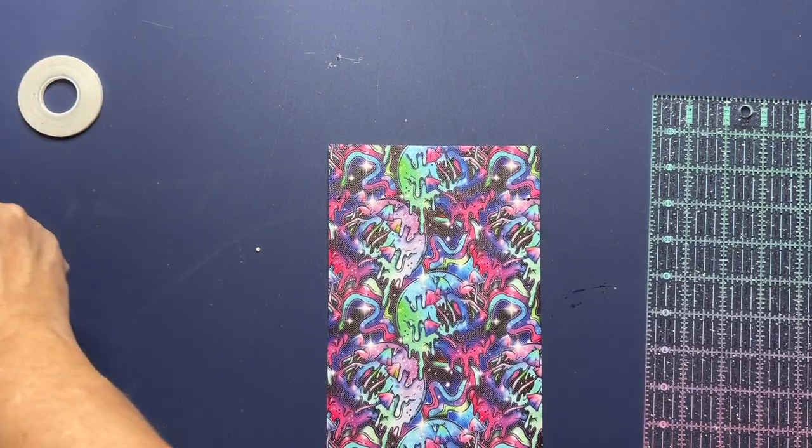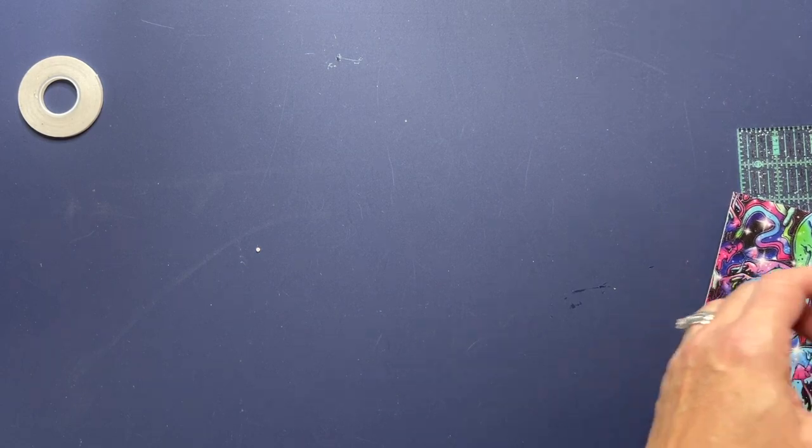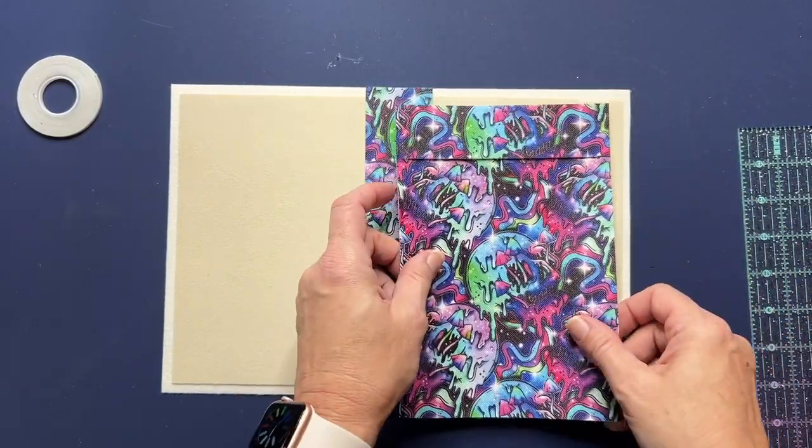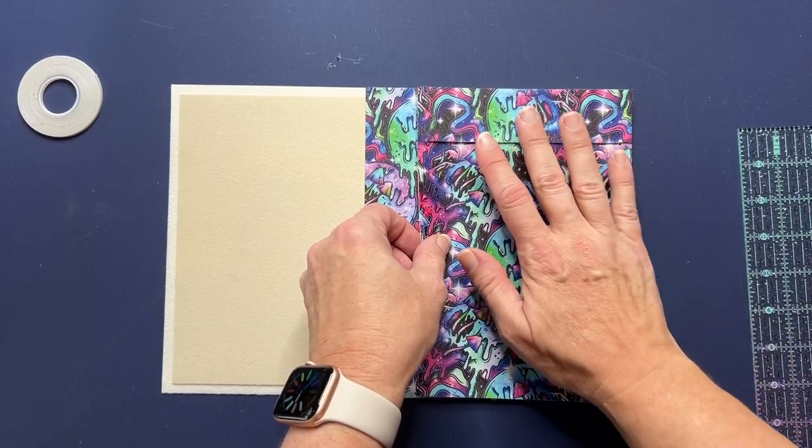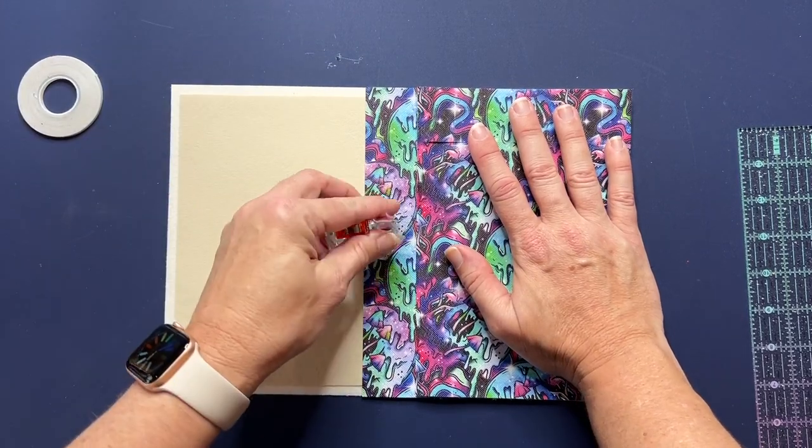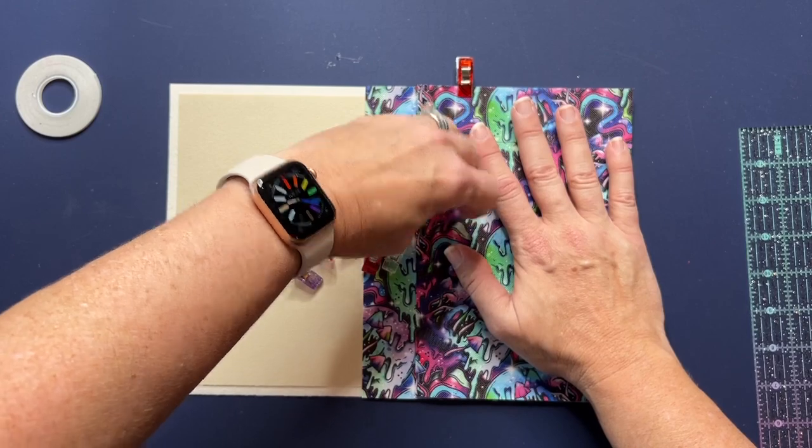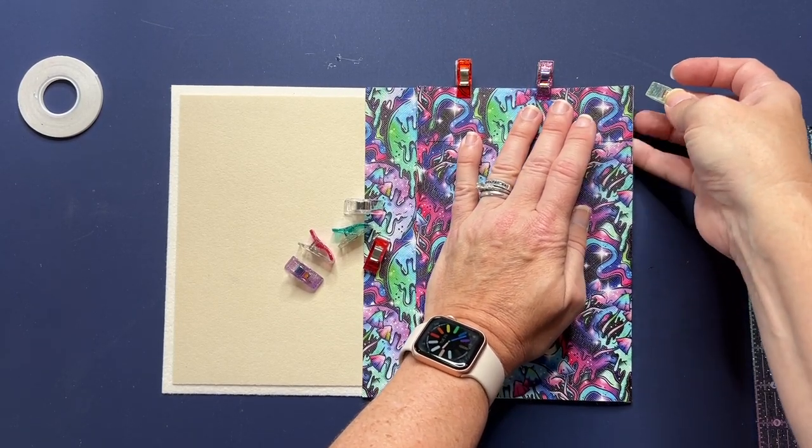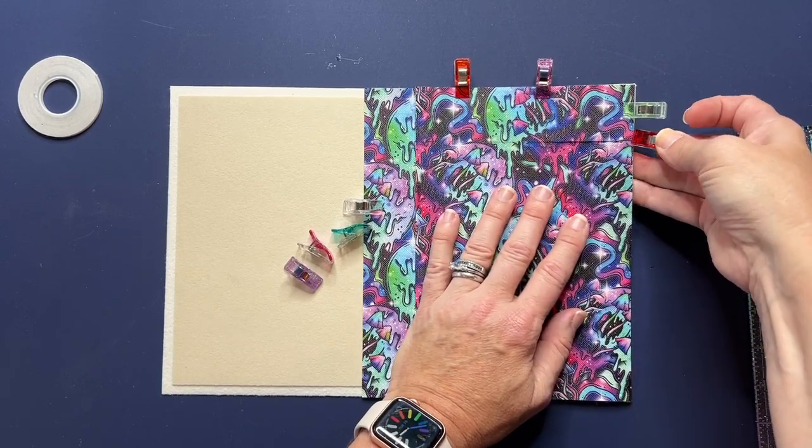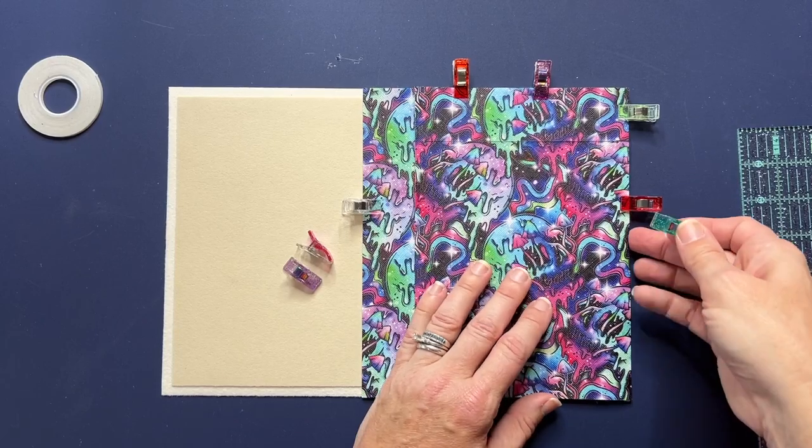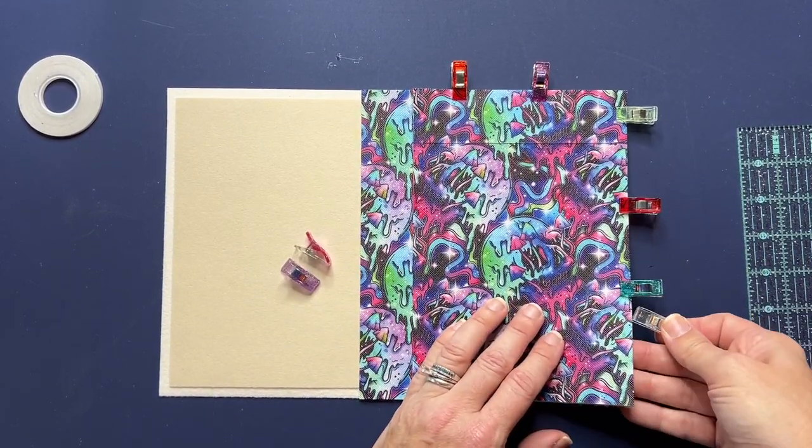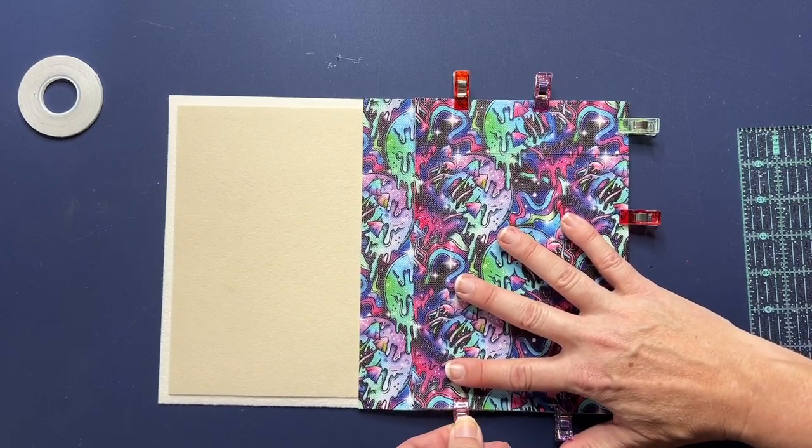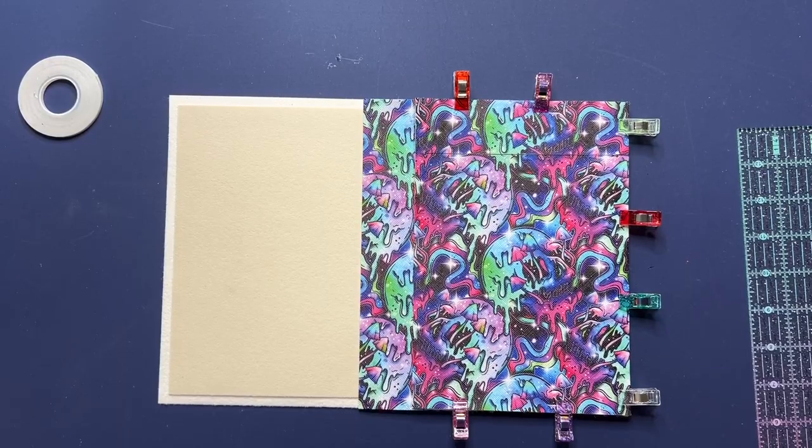Now what we need to do is we need to grab our main exterior. We're going to take this that we just made with the cuts, and we're going to line it up here on the right side of the notepad and clip it in place. Okay, once you have that clipped in place, we can set this to the side.